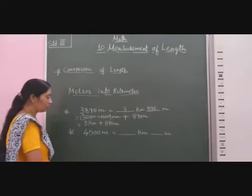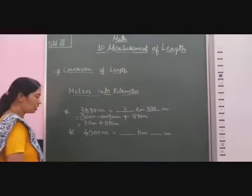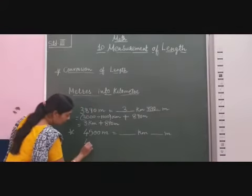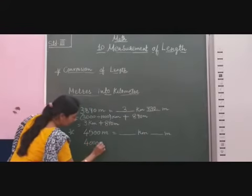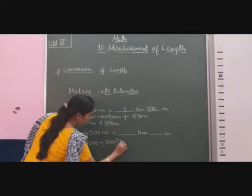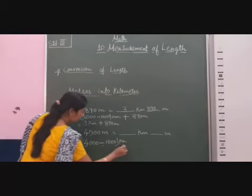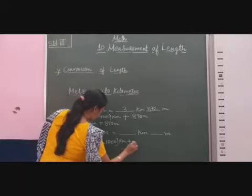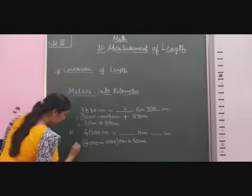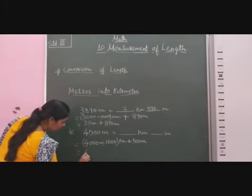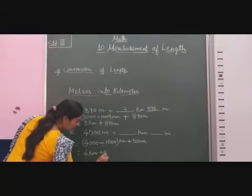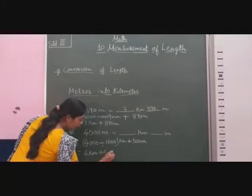Next question: 4500 meters. It is straightforward — 4000 divided by 1000 kilometers plus 500 meters, which gives 4 kilometers plus 500 meters.